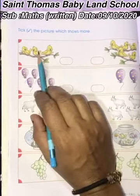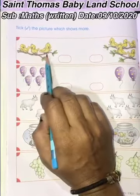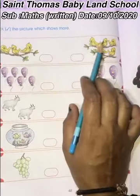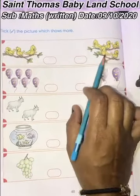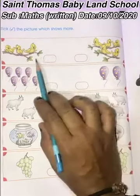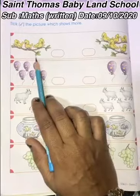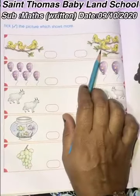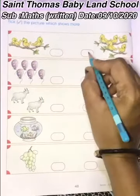First, count it. 1, 2, 3 and 1, 2, 3, 4, 5. There are 3 birds and there are 5 birds. That means 5 is more and 3 is less. So we have to tick here.